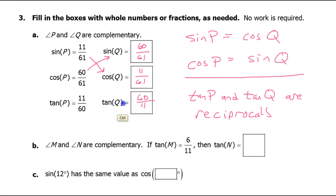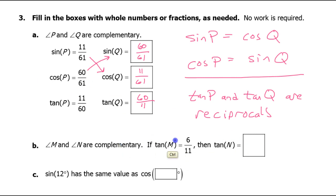A similar rule tells us that the tangent of one angle and the tangent of the other angle are reciprocals of each other. So if tangent of P is 11 over 60, then the tangent of Q should be 60 over 11. It's just a useful trick to memorize. Now, M and N are complementary angles, so these should be reciprocals of each other. So if the tangent of M is 6 over 11, then the tangent of N should be 11 over 6.